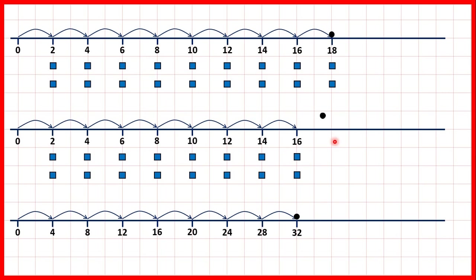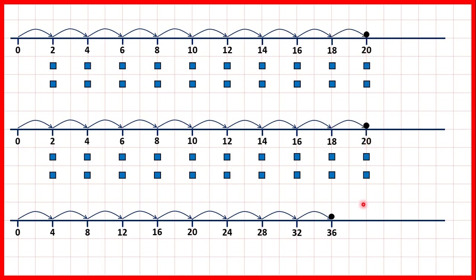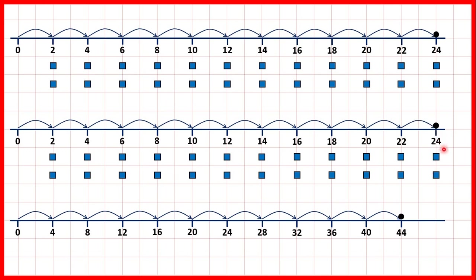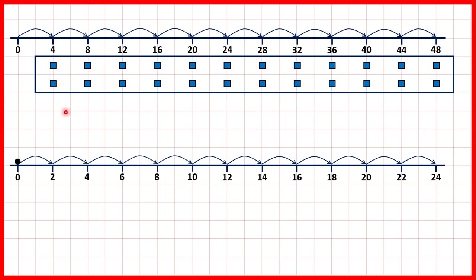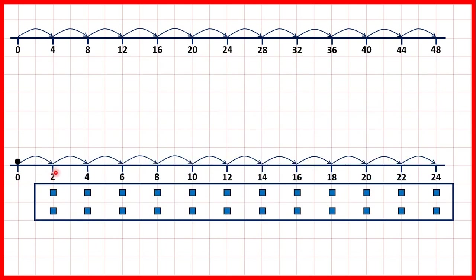9 times 2 is 18 and 9 times 4 is 36. 10 times 2 is 20, but if we double 20 we get 40, and that's why 10 times 4 is 40. Then 11 times 2 is 22 and 11 times 4 is 44. 12 times 2 is 24 and if we double 24 we get 48, so that's 12 times 4. Now, if we take half of these counters showing the 4 times table and get rid of half, you can see that what we have is our 2 times table. That's why halving what's in the 4 times table gives us the 2 times table — half of 4 is 2, half of 8 is 4, half of 12 is 6, and so on.